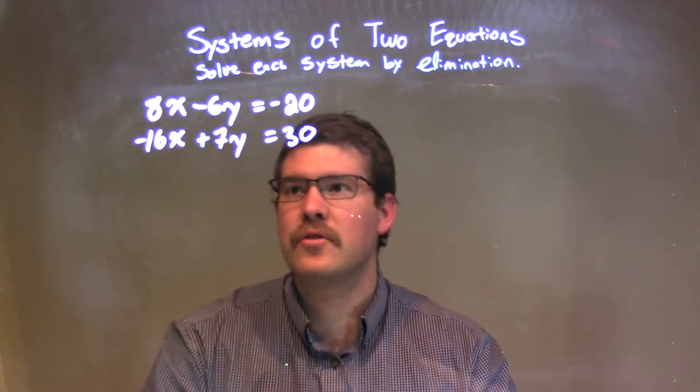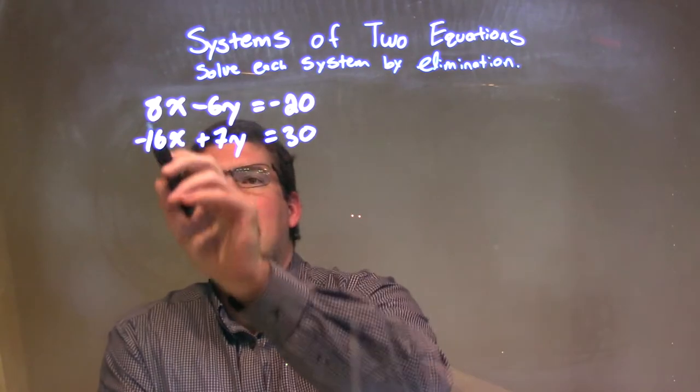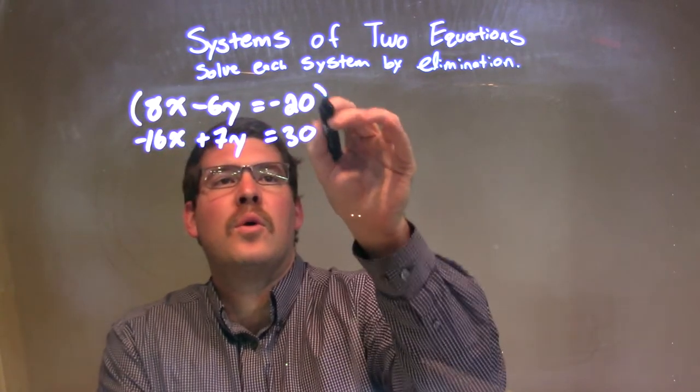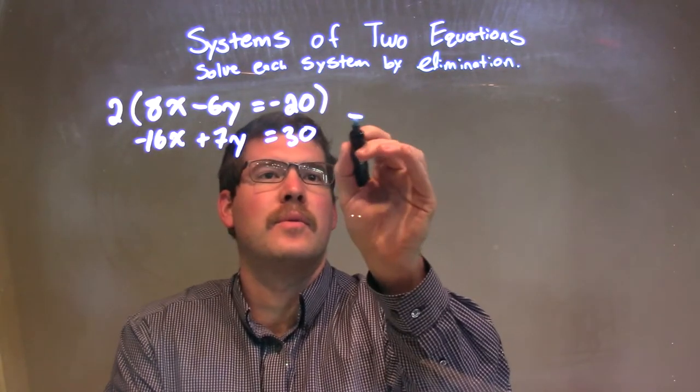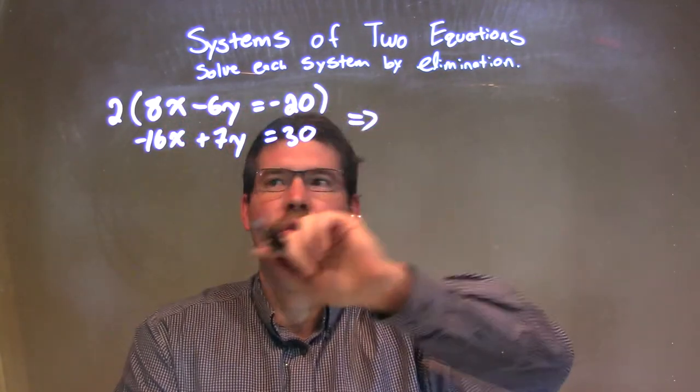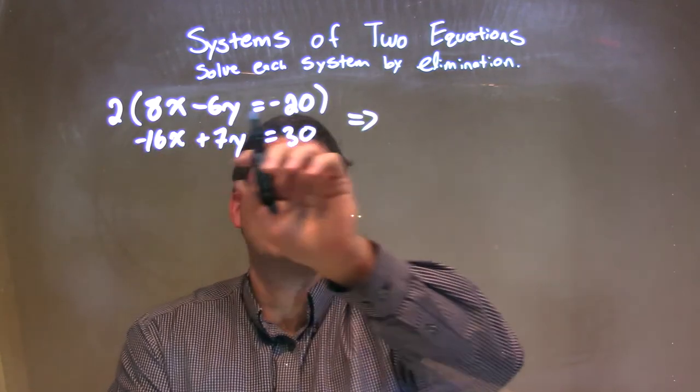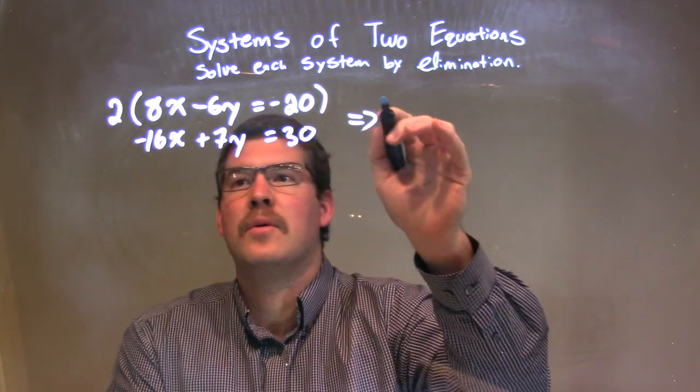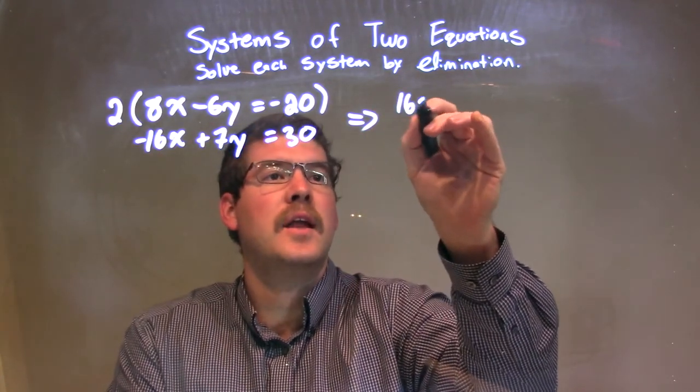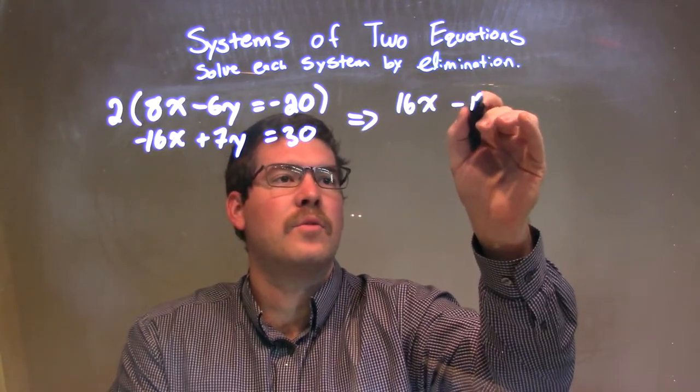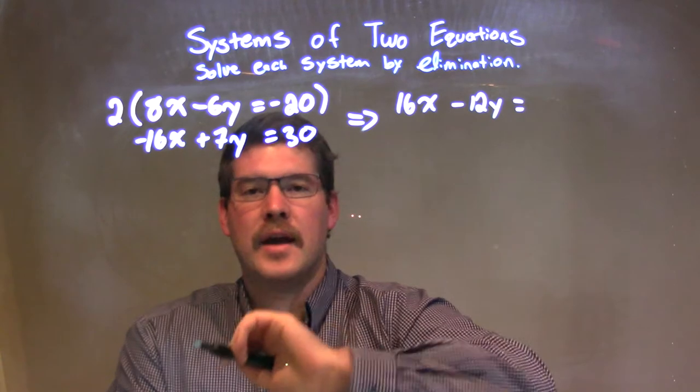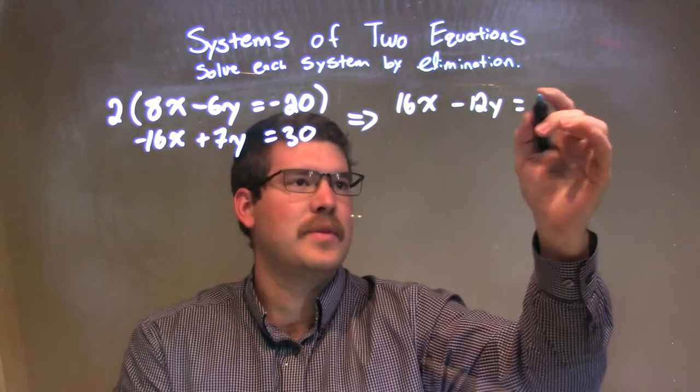So, what I'm going to do is I'm going to take this first top equation, and I'm going to multiply the whole thing by 2. So, I'm going to multiply that whole thing by 2, so that becomes 2 times 8x is 16x, and 2 times the minus 6y is a minus 12y. And don't forget the negative 20. 2 times negative 20 is negative 40.